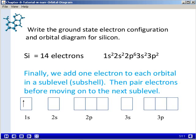Next, we'll add one electron to each orbital in a given subshell, and then pair the electrons before moving on to the next subshell or sublevel. So the 1s subshell gets one electron. Then we'll pair up a second electron with that electron in the 1s subshell before we move on to the 2s subshell, which will get two electrons.